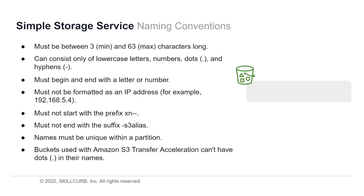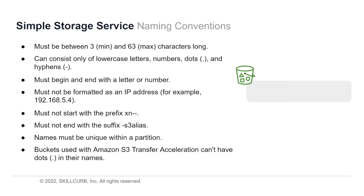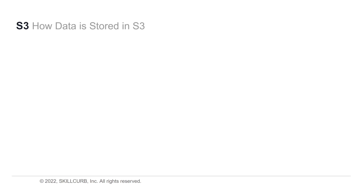Your S3 bucket must not end with the suffix '-s3alias' — for example, 'my-bucket-s3alias' would not work. Additionally, names need to be unique within the partition, meaning you can never have two S3 buckets with the same name. Lastly, buckets used with Amazon S3 Transfer Acceleration cannot have dots in their name.